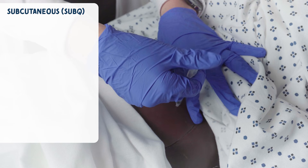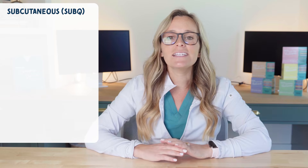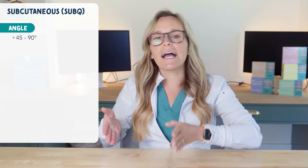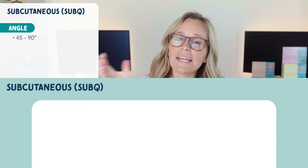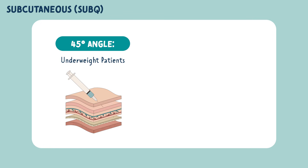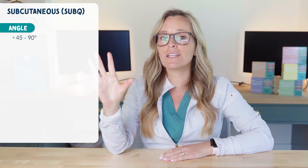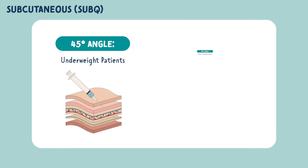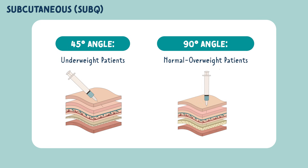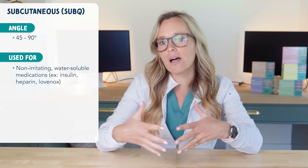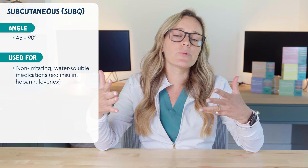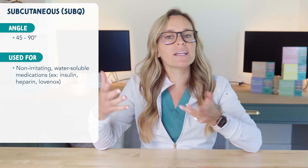Next we have the subcutaneous route. This is given in the subcutaneous tissue. It's given at a 45 to 90 degree angle. You give it at a 45 degree angle for underweight patients, because we don't want to accidentally go into the muscle since these patients don't have a lot of fat. You give it at a 90 degree angle for normal to overweight patients. It's used for non-irritating water-soluble medications. Examples would be insulin, heparin, and Lovenox.